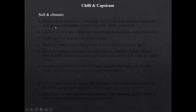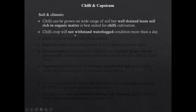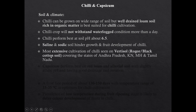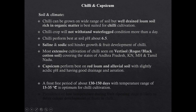Chili can be grown on a wide range of soils, but well-drained loamy soil rich in organic matter is best suited. Chili crop will not withstand waterlogged condition for more than a day. Chili performs best on soil pH of about 6.5. Saline and sodic soil hinder the growth and fruit development in chili. Most extensive cultivation of chili is seen on vertisol covering the states of Andhra Pradesh, Karnataka, Maharashtra and Tamil Nadu. Capsicum performs best on red loam and alluvial soil with slightly acidic pH, good drainage and aeration. A frost-free period of 130 to 150 days with temperature range between 15 to 35 degree Celsius is optimal for chili cultivation.